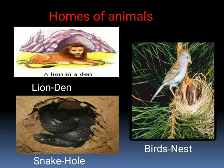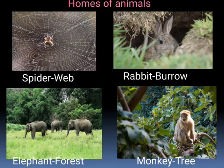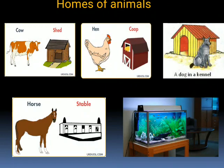A snake lives in a hole. A spider makes a web. A rabbit makes a burrow to live in. An elephant lives in a forest under a tree. A monkey lives on a tree. Cows live in a shed made by us. Hens live in a coop. A dog lives in a kennel made by us. A horse lives in a stable made by us. Fish are kept in an aquarium.